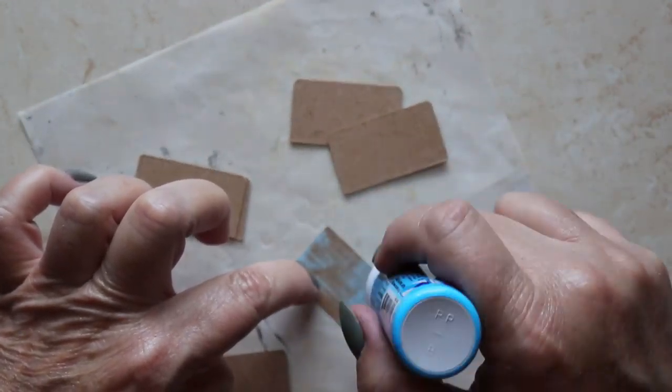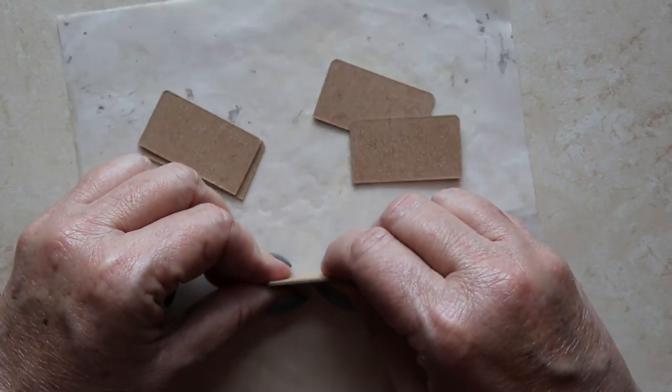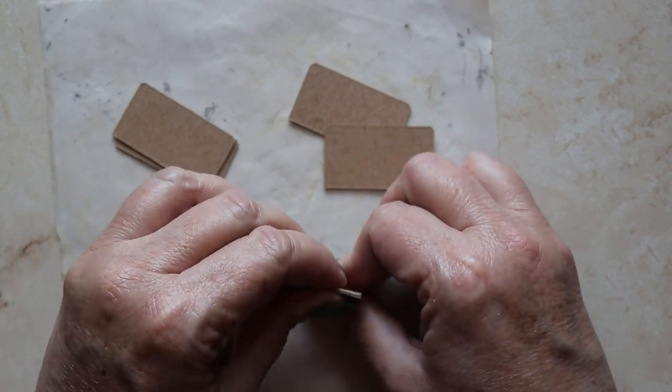These are created by laminating two pieces of lightweight chipboard together. For this operation, I'm using Zig two-way glue. Now you see six of the treads here, but in reality you only need four.